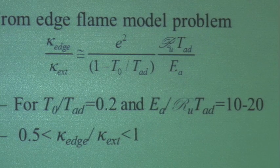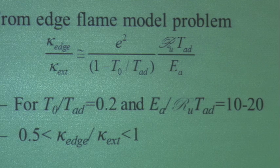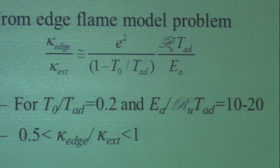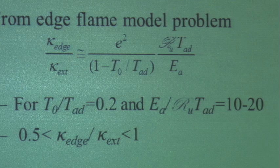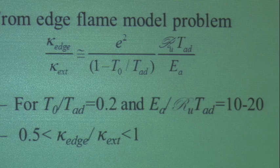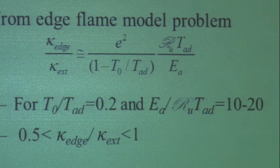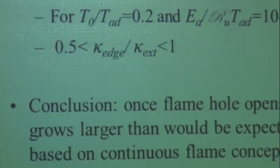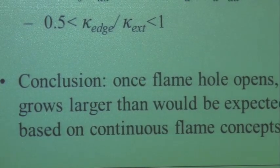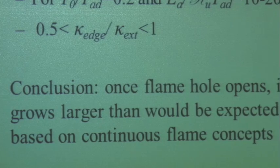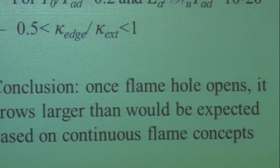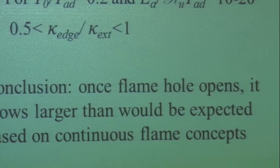Once a flame hole opens, it's going to grow larger than would be expected based on continuous concepts. That's the main point. You send a vortex through a flame, the strain rate's too high, it makes a hole. That flame hole is going to grow bigger than you might think based upon the local stretch rate. Because you have an edge, that hole's going to grow bigger. There are some nice simulations by Hong Im and Jackie Chen where you can clearly see extinction, and where these edges don't correspond to the value of the stretch rate kappa extinction — they're at actually lower stretch rates.